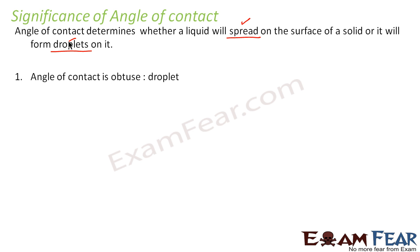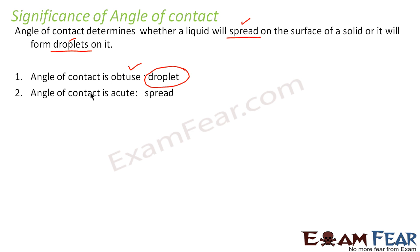If the angle of contact is obtuse — that is, greater than 90 degrees — then a droplet is formed. On the contrary, if the angle of contact is acute, then the water will spread. So remember: if the angle of contact is obtuse, it will form a droplet, and if it is acute, it will spread on the surface of the solid.